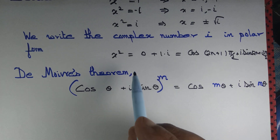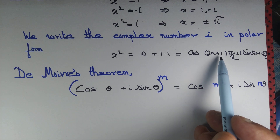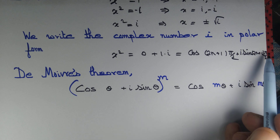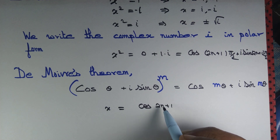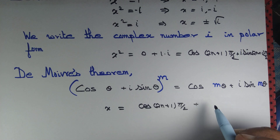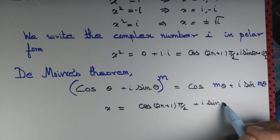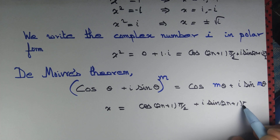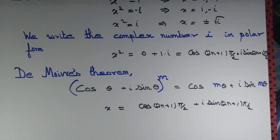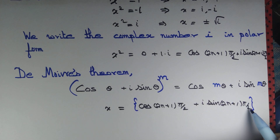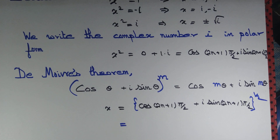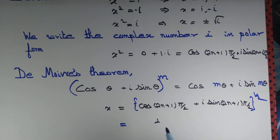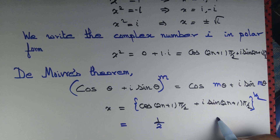Let us do the same thing here. We have x² = cos((2n+1)π/2) + i sin((2n+1)π/2). So x = [cos((2n+1)π/2) + i sin((2n+1)π/2)]^(1/2). By De Moivre's theorem, we multiply the angle by the power. The power is 1/2, so we multiply the angle by 1/2.